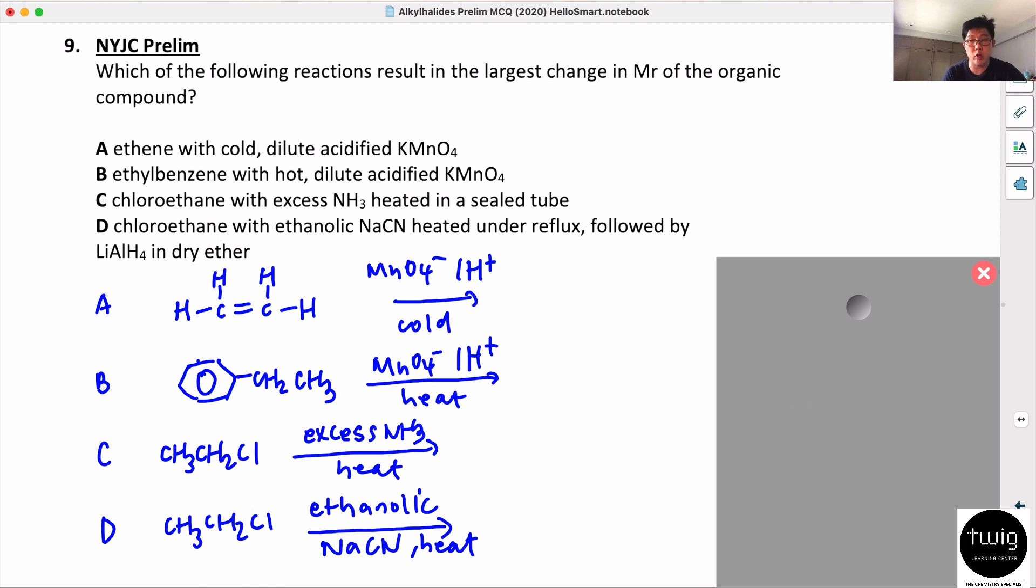The first one is a mild oxidation. You're going to get a diol. So you get diol, which means OH and OH.